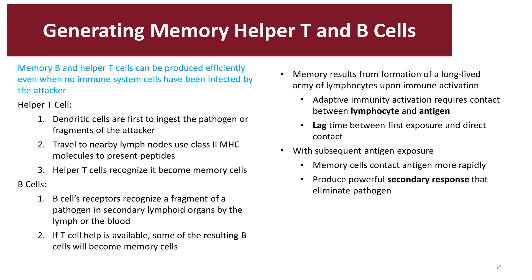In the B-cell system, the B-cell receptors recognize a fragment of the pathogen inside some secondary lymphatic tissue like the lymph nodes. If T-cells are available, then some of the resulting B-cells will differentiate into memory cells.